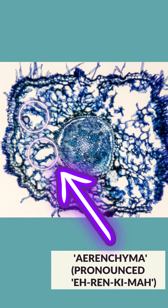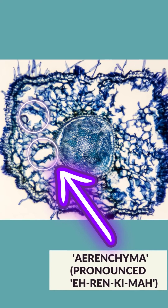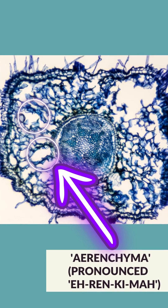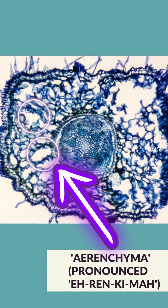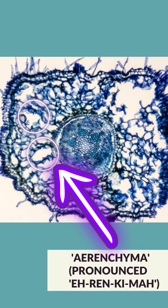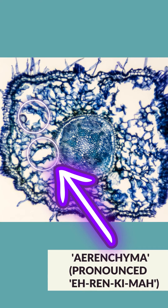This here is a eucalypt root where the eucalypt has grown in flooded conditions, and you can see there are large areas of aerenchyma where you've got all this air space where the oxygen is supplied from higher up the stem.